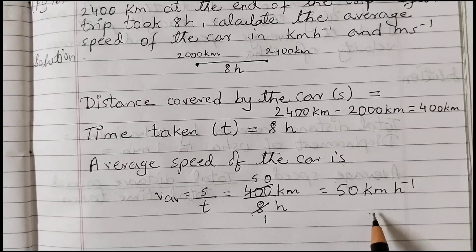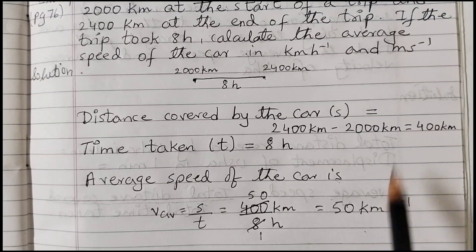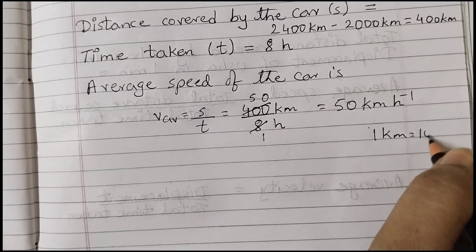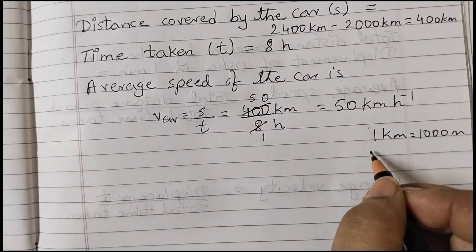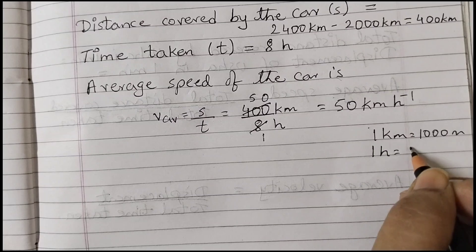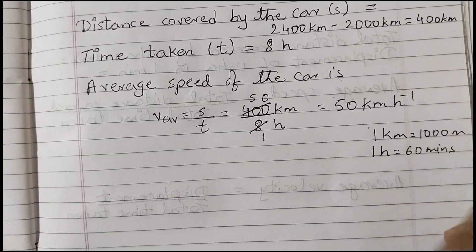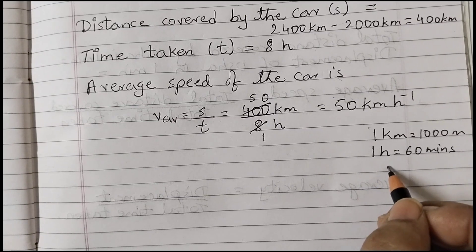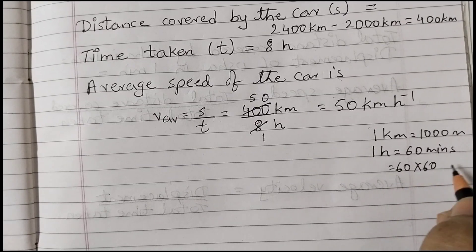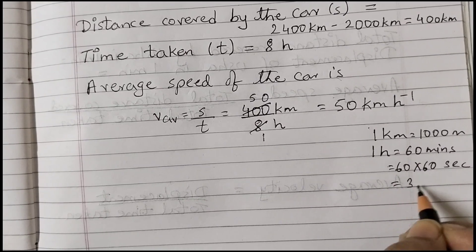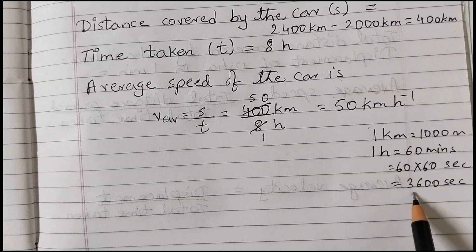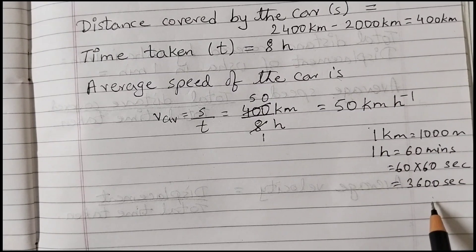Now we need to convert 50 km/h to meters per second. We know that 1 kilometer equals 1000 meters, and 1 hour equals 60 minutes. To convert minutes to seconds, multiply by 60, so 60 × 60 = 3600 seconds. Therefore, 1 hour equals 3600 seconds.